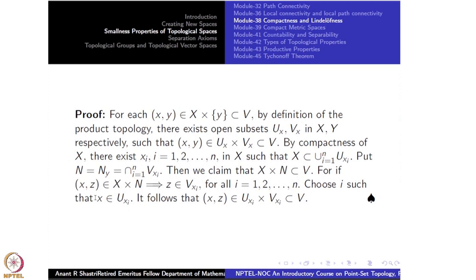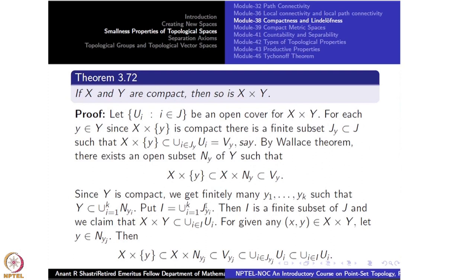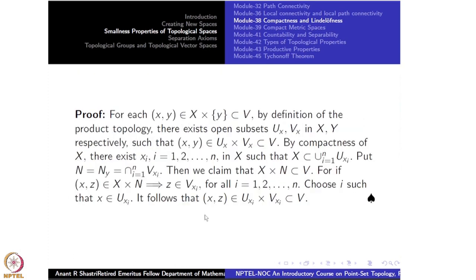Why is X × N_y ⊆ V? Take any (x, z) in X × N_y. Since z is in the intersection, z ∈ V_{x_i} for all i. Choose i such that x ∈ U_{x_i}. Then (x, z) ∈ U_{x_i} × V_{x_i} ⊆ V. So X × N_y ⊆ V. Wallace's theorem says: given a compact slice X × {y} inside an open set V, you can find a uniform neighborhood — one single neighborhood N_y of y — such that X × N_y ⊆ V.